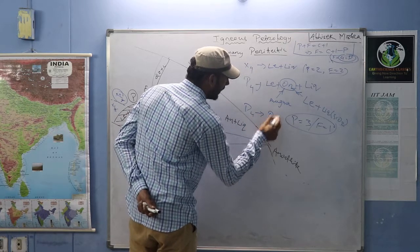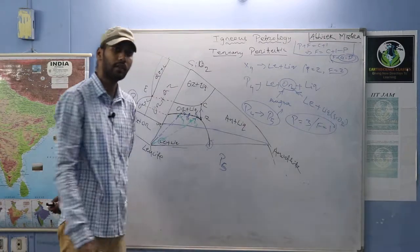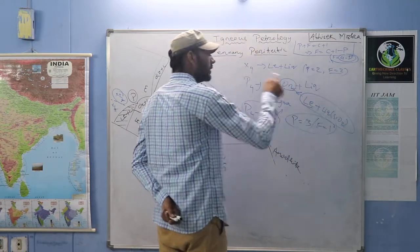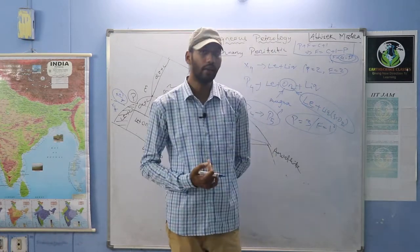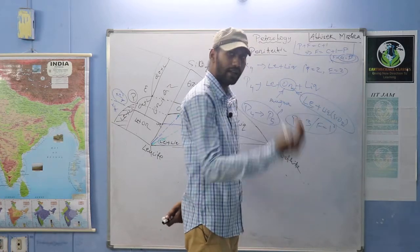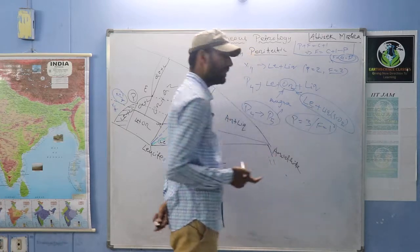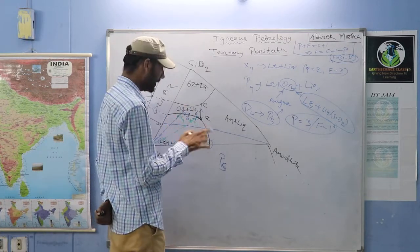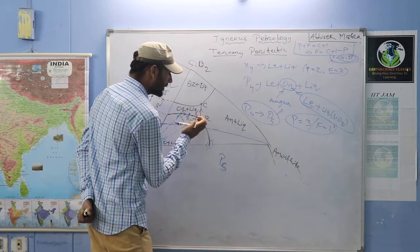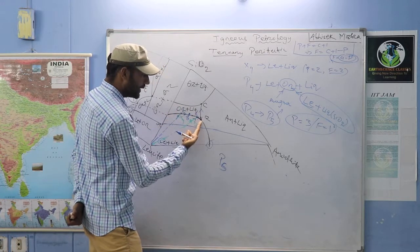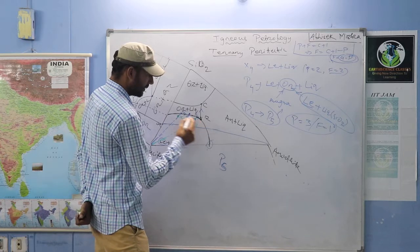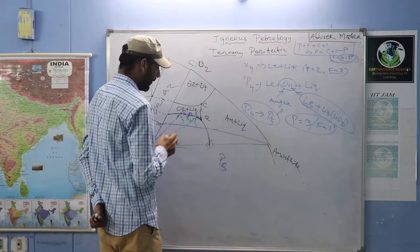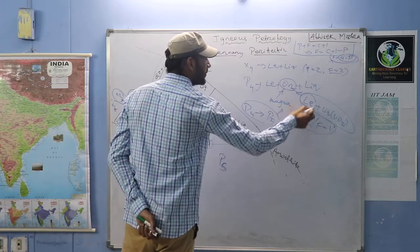At P5 (leucite finished), phases become orthoclase plus liquid — two phases, degree of freedom two. So the system directly jumps to the next field. If leucite is over, you get orthoclase plus liquid. Phase two, degree of freedom two means you join with the vertex, touching P6. At P6: orthoclase plus quartz plus liquid.